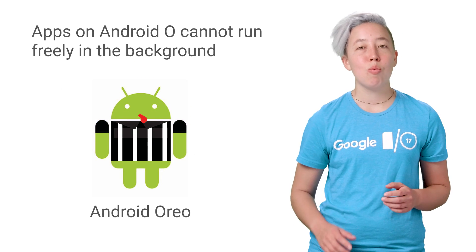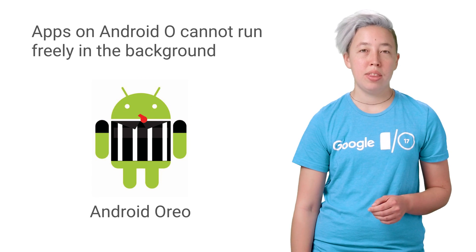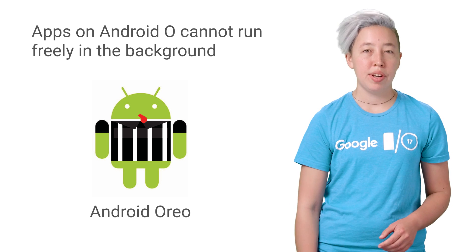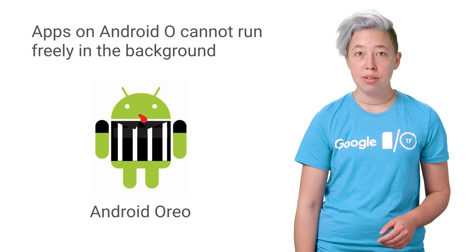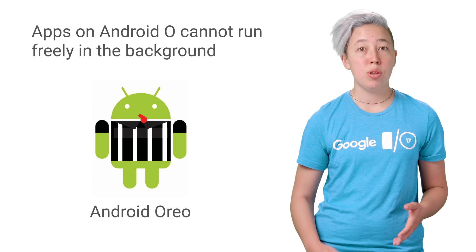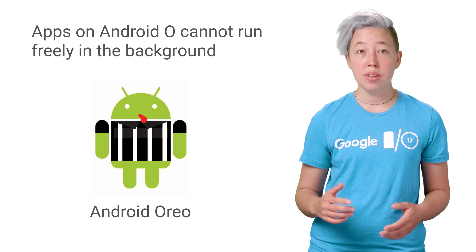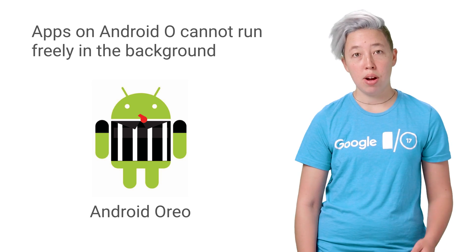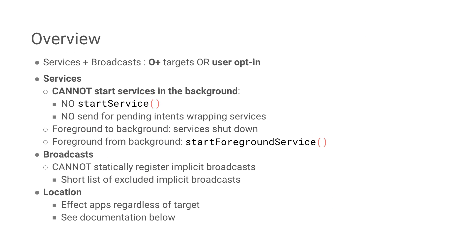Android Oreo introduces a radically different way to think about background services. Apps cannot run freely in the background. This has implications for apps launched from an implicit broadcast, as well as apps starting services in the background. Here's a quick list of affected APIs. Location APIs are also affected, but I'm not going to be covering these now — more details on location updates are in the notes below.